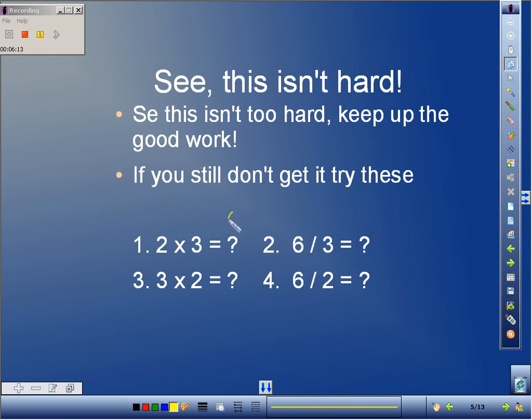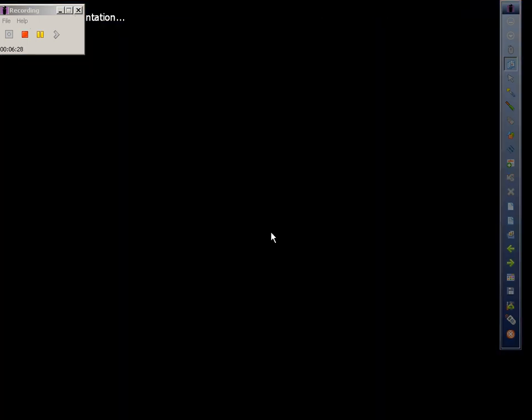2 times 3 is going to equal 6. 3 times 2 is also going to equal 6. Using the same numbers of 6, 3 and 2, we can see 6 divided by 3 equals 2 and 6 divided by 2 equals 3. So that's our presentation for math book lesson 8.1 and our inverse operations. We'll talk to you and see you again soon.